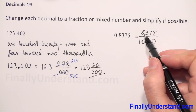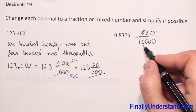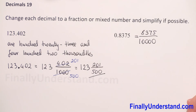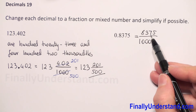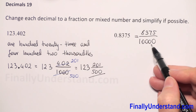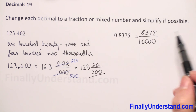So we have 8375 over 10000. Next we check if we can reduce. We have 75 at the end of the numerator and two zeros at the end of the denominator, so we can divide numerator and denominator by 25.